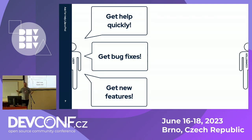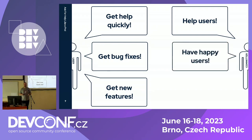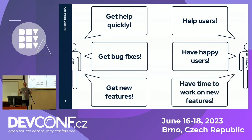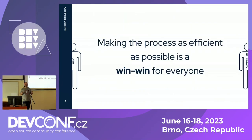Similarly, if you're a committer in the project, you're interested in helping your users — one reason we do this is that we want to have as many users as possible. But at the same time, a lot of community members don't really want to spend all their time answering questions. Some prefer to write code, some want to do testing, some want to write docs or do other community work. Not everyone wants to just spend their time answering questions in forums. So they also want this process to be as efficient as possible — it's win-win for everyone.